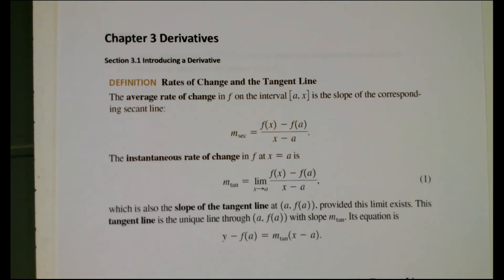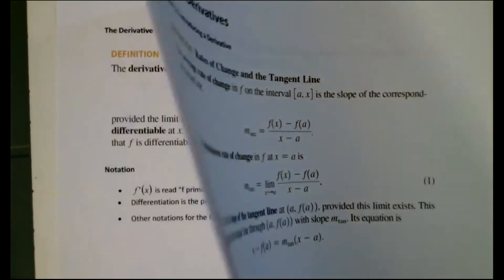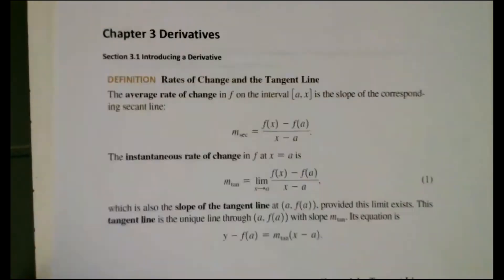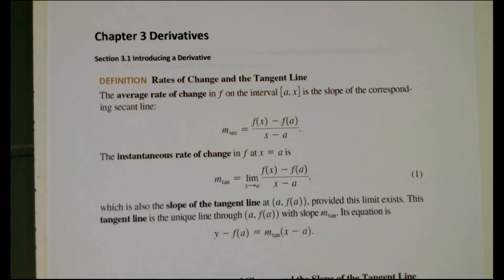In this video we're going to begin Chapter 3, dealing with derivatives. This will be one of the longest chapters in this course because there are about 10 sections in Chapter 3 that I will be covering. In Section 3.1, we're introducing a derivative — finding rate of change, looking at the slope of a tangent line, the derivative function, its notation, and using the definition of a derivative to find derivatives of functions.